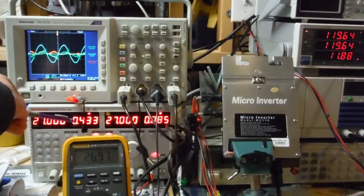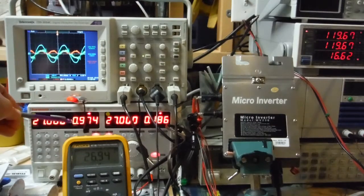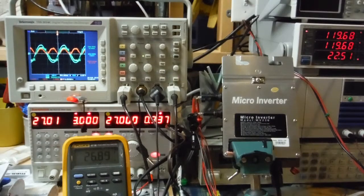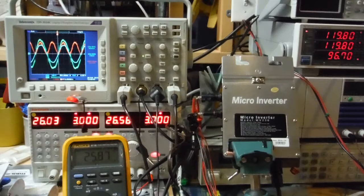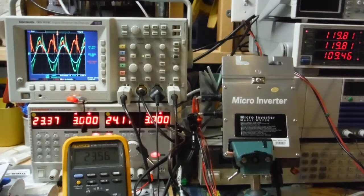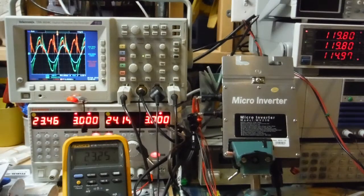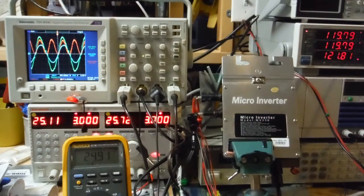My bench supply is going to limit at 3 amps per channel, so once it settles out, it should pick a power such that both of these channels rail at 3 amps. I'm going to let that steady out.